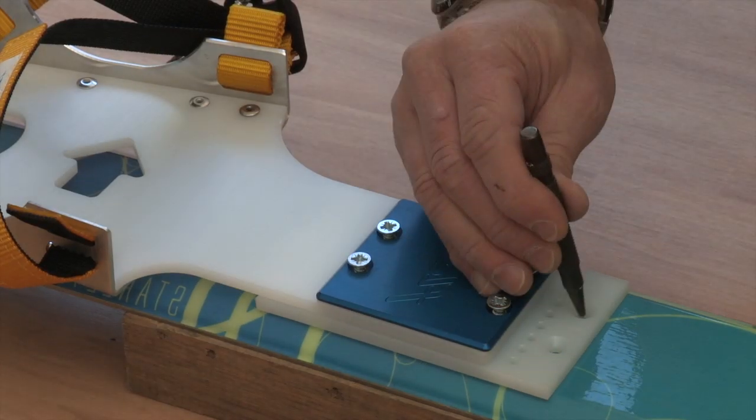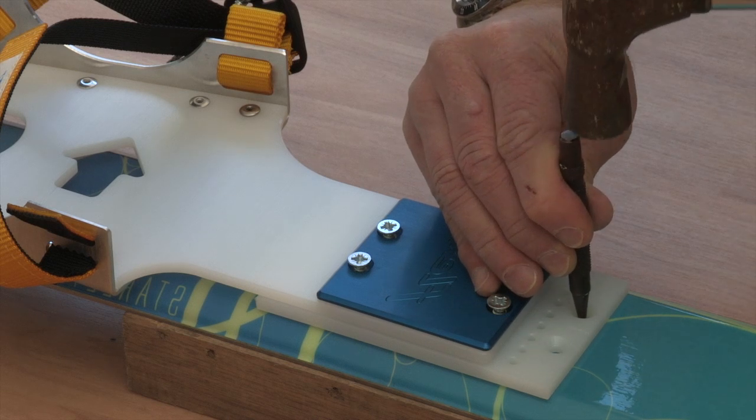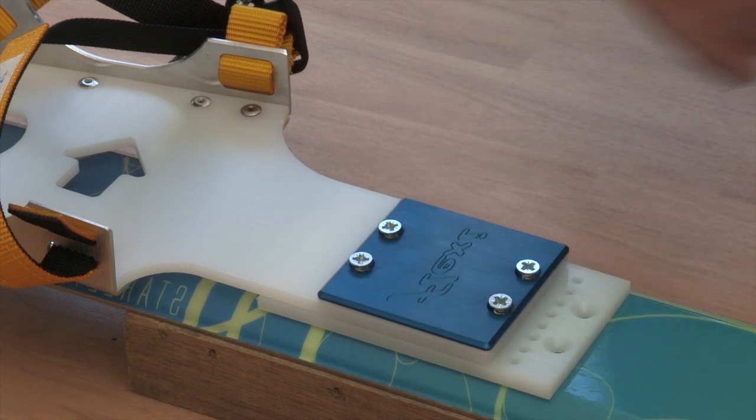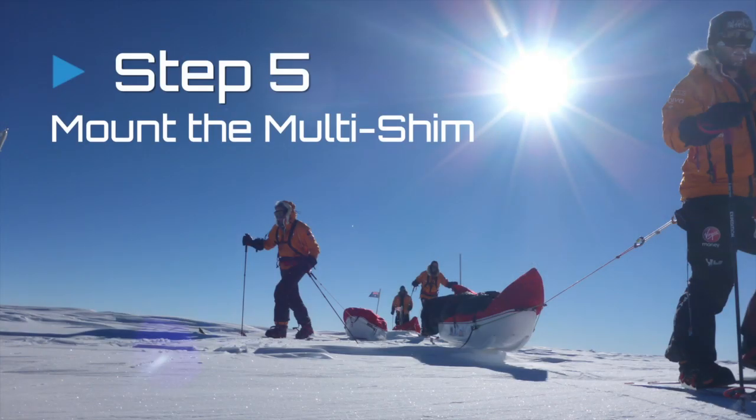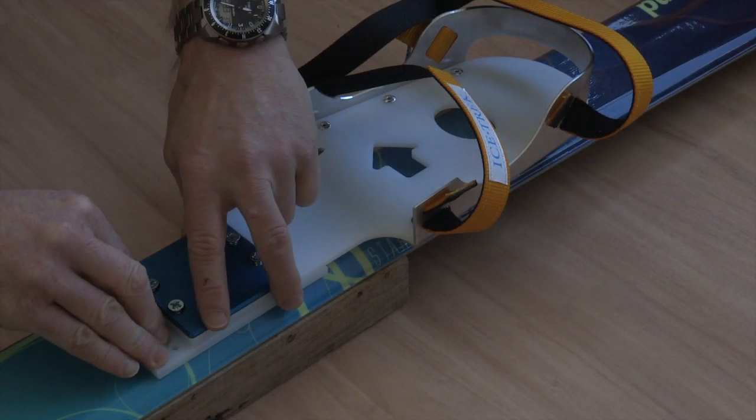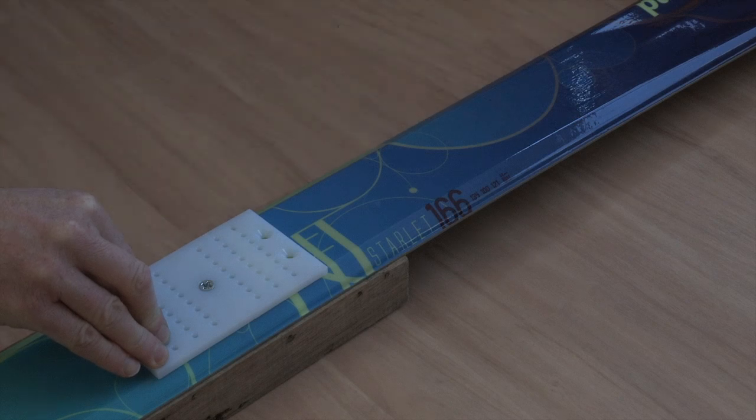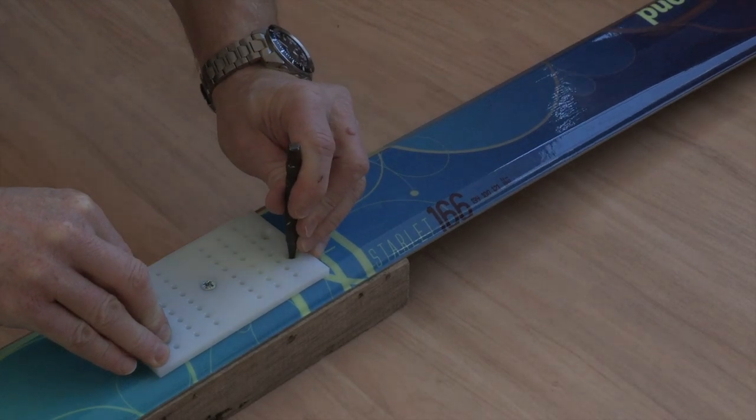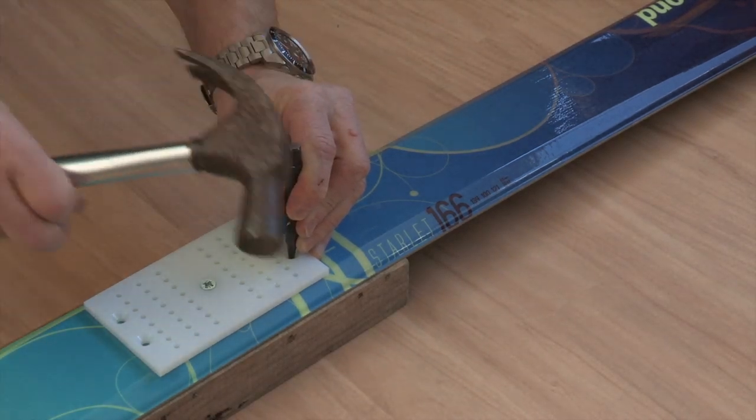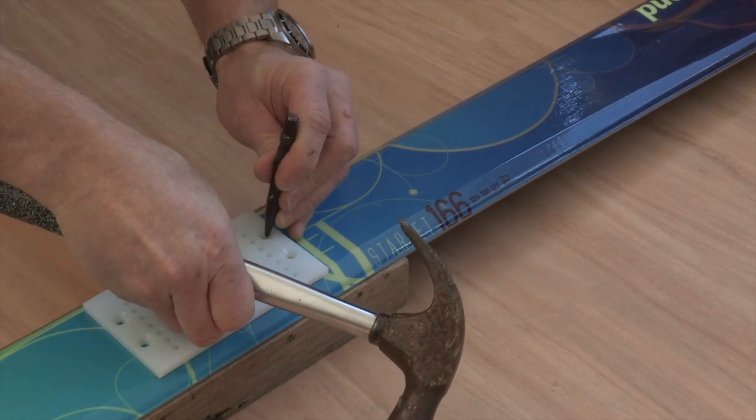Without disturbing the position of the assembly, punch the centres of the two large holes to mark pilot indents in your ski. Again, without disturbing the position of the multi-shim, remove the Flexi binding and use the same technique to punch indents in the rear large holes of the multi-shim.